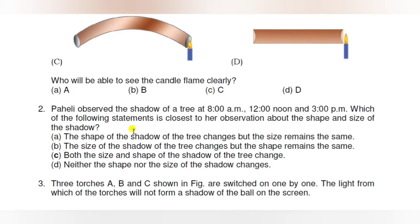Question 2 is about what is true regarding the shape and size of the shadow of a tree. Option A: the shape of the shadow changes but the size remains the same. Option B: the size of the shadow changes but the shape remains the same. Option C: both the size and shape of the shadow change. Option D: neither the shape nor the size of the shadow changes.